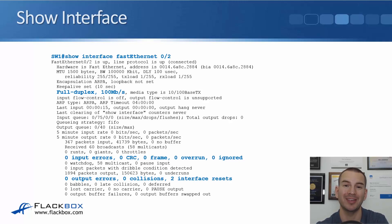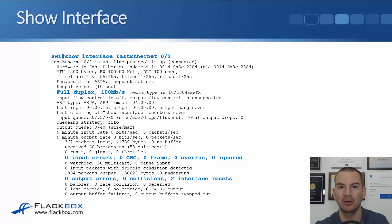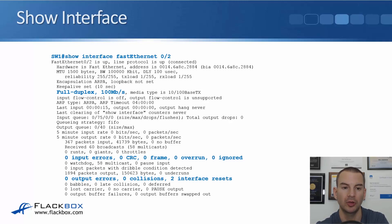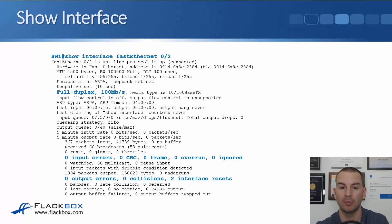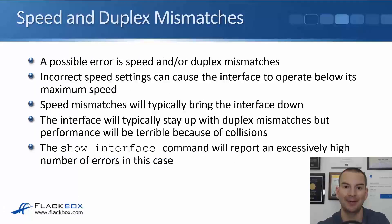If you do just show interface and hit enter, you'll get a really long output because it will show every single interface in the router or switch. So usually we specify the interface, like show interface FastEthernet 0/2. Here we can see it's set to full duplex and the speed is 100 megabits per second, with no input errors and no output errors — that's a good sign.